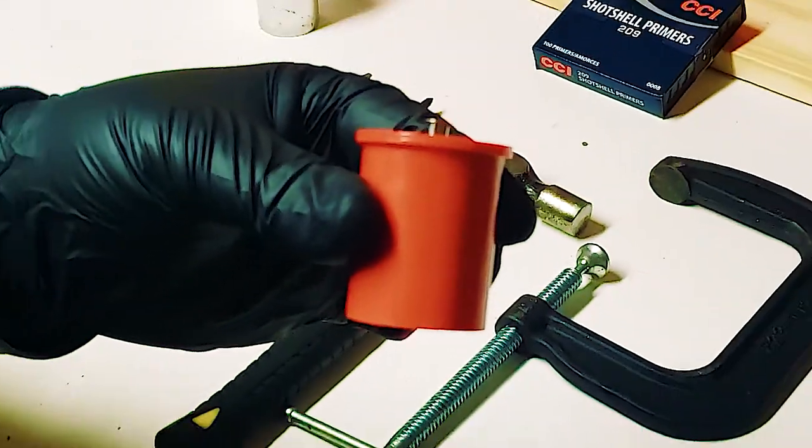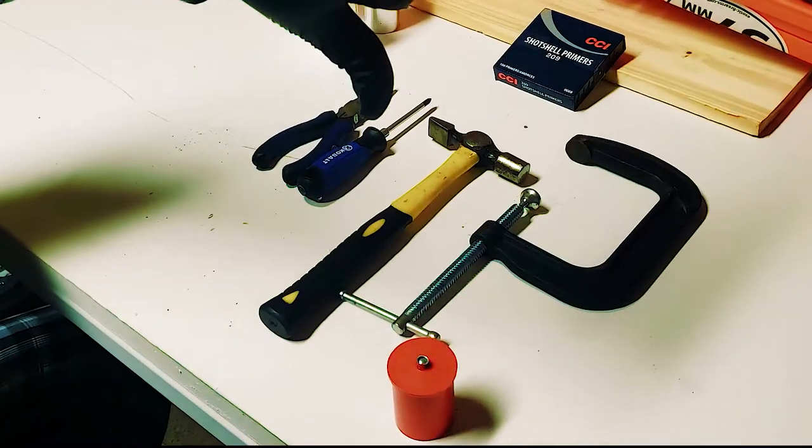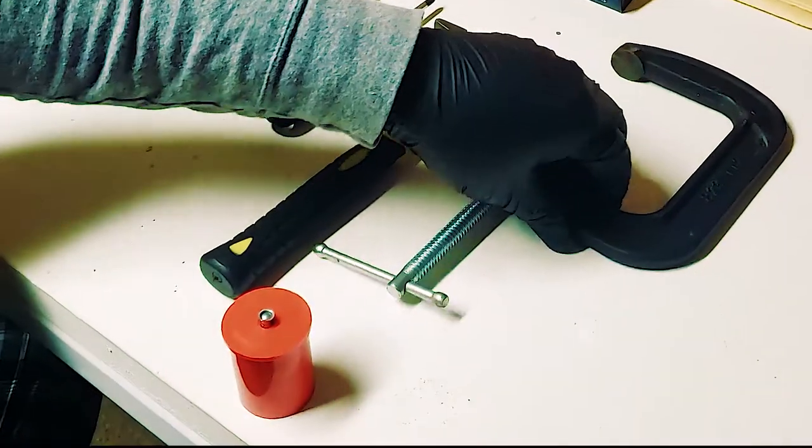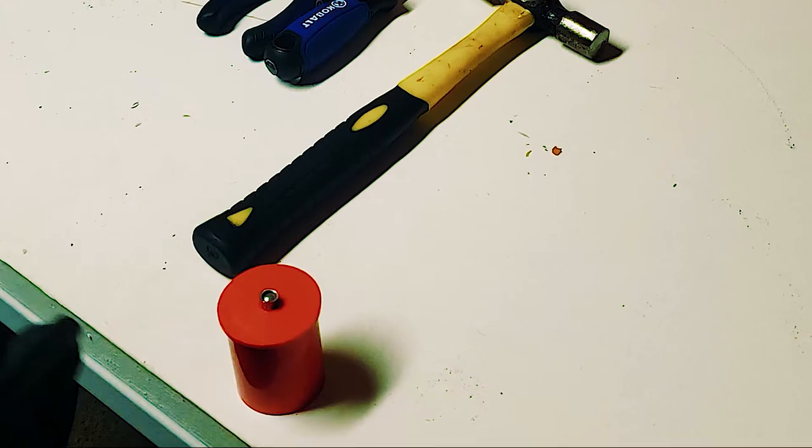Now with these plastic hulls, you might run into an issue where the primer does not easily fit into the base. I've got a quick and easy solution for this: I use a small C clamp as a makeshift press.